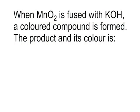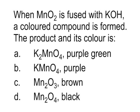Question 4: When MnO₂ is fused with KOH, a colored compound is formed. The product and its color is: (A) K₂MnO₄, purple-green; (B) KMnO₄, purple; (C) Mn₂O₃, brown; or (D) Mn₃O₄, black. The answer is option A — the product is K₂MnO₄, purple-green.